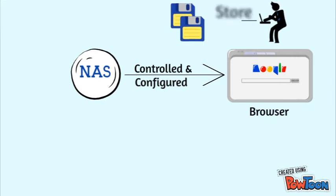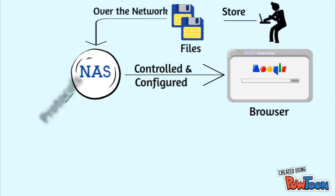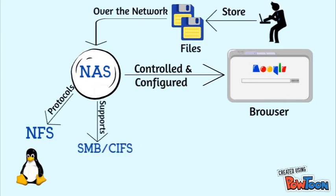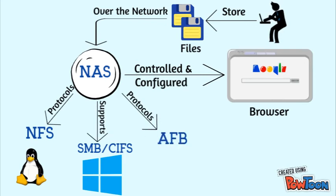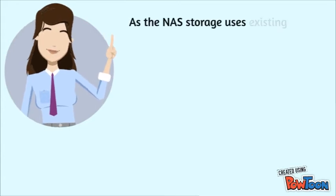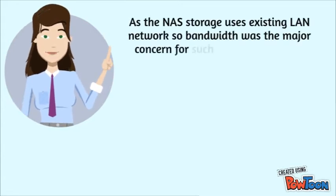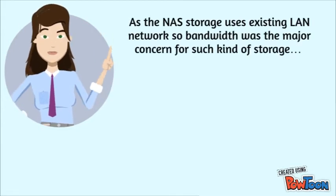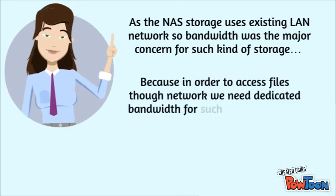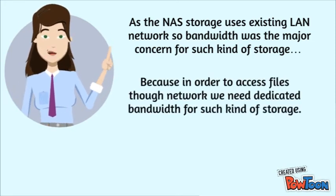To store files over the network, NAS uses file-based protocols such as NFS, which supports Linux and Unix kind of operating systems; SMB/CIFS protocols supported by Windows operating systems; and AFP protocols supported by Apple OS machines. As the NAS storage uses the existing LAN network, bandwidth was a major concern for this kind of storage, because in order to access files through the network, we need dedicated bandwidth.